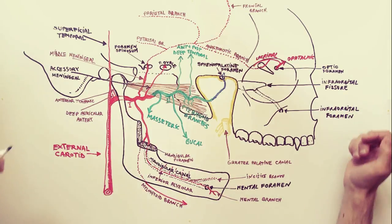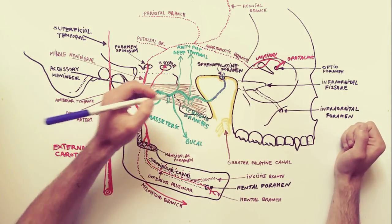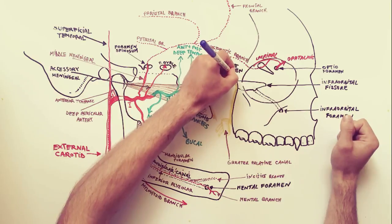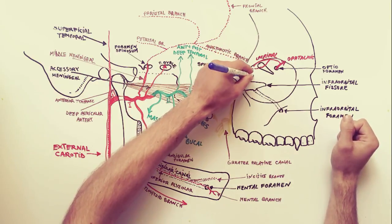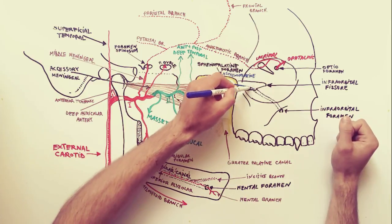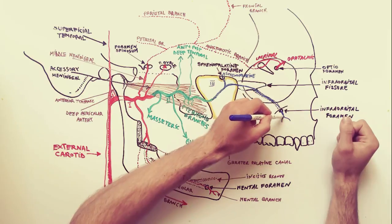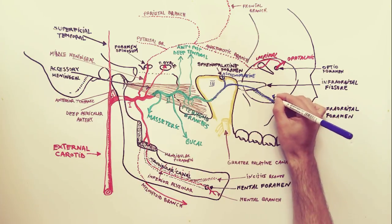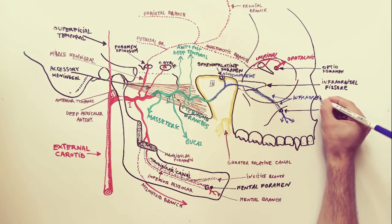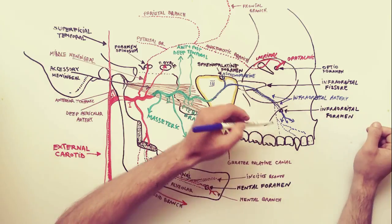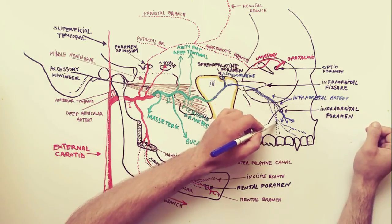The third part of the maxillary artery is present at the level of the pterygopalatine fossa. It stretches from the pterygomaxillary fissure to the sphenopalatine foramen, at which level the maxillary artery terminates with the sphenopalatine artery — the terminal branch. The first branch to describe from the third part is the infraorbital artery. This artery accompanies the similarly named nerve through the infraorbital groove and canal, and after exiting through the infraorbital foramen gives off inferior palpebral, lateral nasal, and superior labial branches. While coursing through the infraorbital groove and canal, it gives off anterior superior alveolar arteries.